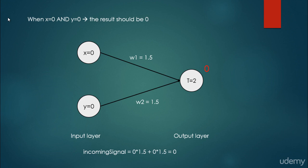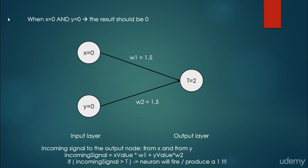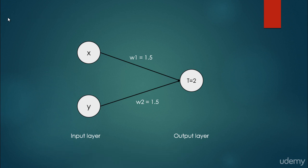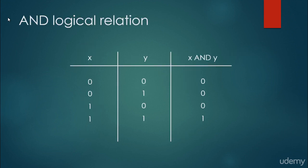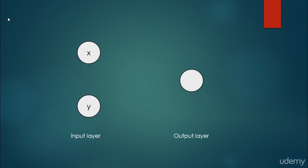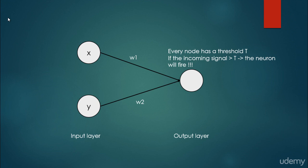So far, so good. The first line in our logic table: x is equal to 0, y is equal to 0, so the output x AND y is going to be 0. The second line is x=0, y=1. The third line is x=1, y=0. We should get 1 in the output layer only when both x and y are 1. Let's see whether that is true.